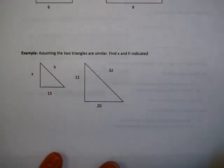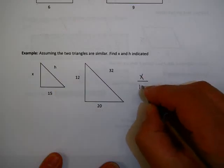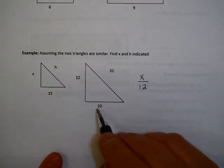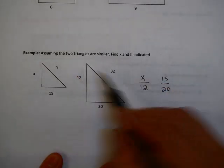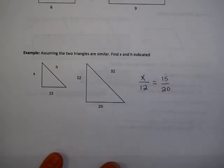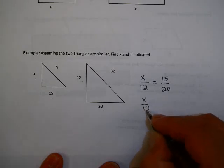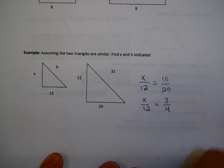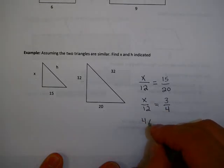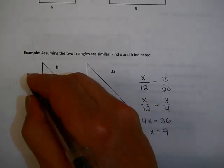So, I'm going to set up a ratio of corresponding parts. So, here I have x over twelve. Those are corresponding parts. And I have fifteen over twenty. Now, if these triangles are similar, this ratio of corresponding parts has to be equal. Now, to make my life a little simpler, I'm going to simplify this fraction, divide the top and bottom by five. And now, I'm going to cross-multiply and get four x equals thirty-six, or x equals nine. So, x is nine.